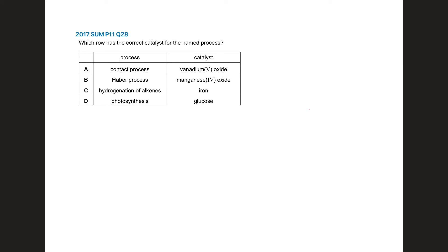Which row has the correct catalyst for the named process? Contact process has vanadium 5 oxide. I think we have a winner in A. The answer is A. Let's confirm the others as well. Haber process - it's not magnesium oxide, it is iron. Hydrogenation of alkenes has nickel, not iron. Photosynthesis - glucose is a product, not a catalyst.